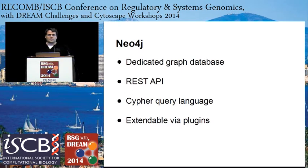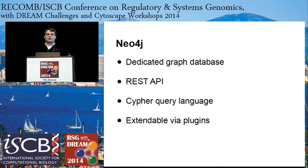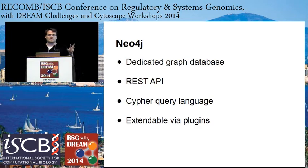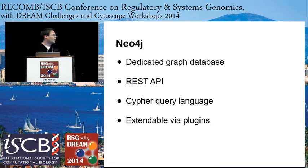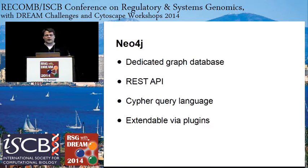For those that don't know, Neo4j is a dedicated database developed to store a graph. It is primarily used through a REST API, but you can also have direct Java access as an embedded object in your program. The interesting part is the Cypher query language, which is an SQL-inspired query language to access and navigate the graph. This allows you to quite easily define statements like: I want to go from node A, which is a microRNA, to its gene target, and from those targets, find which other regulators regulate those genes. You can also add plugins to a Neo4j server pretty easily to extend functionality, which then becomes exposed via the REST API.